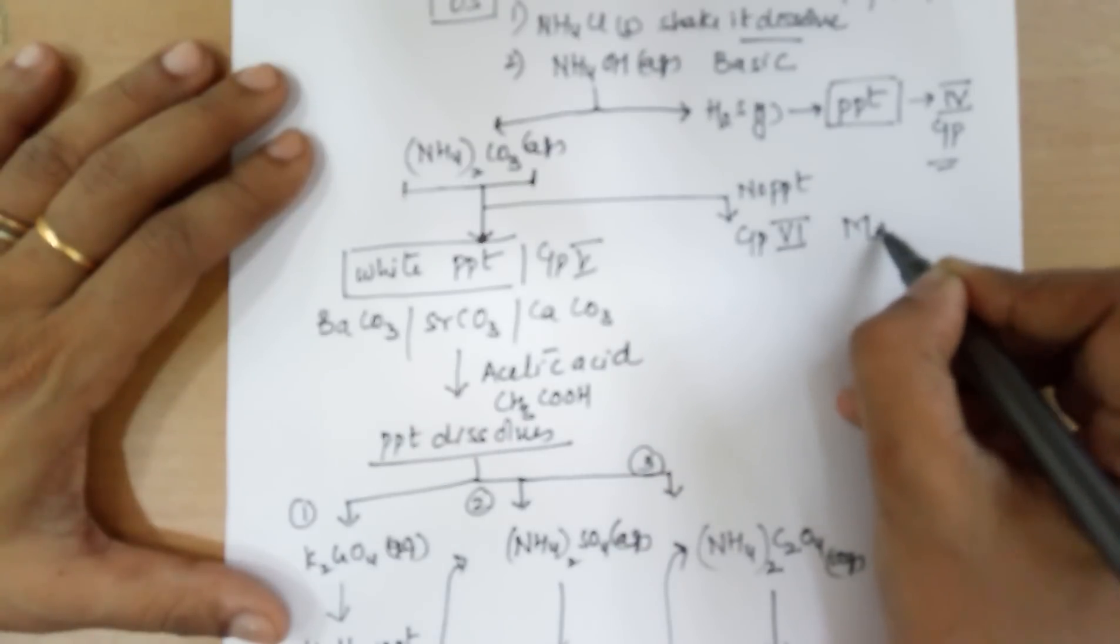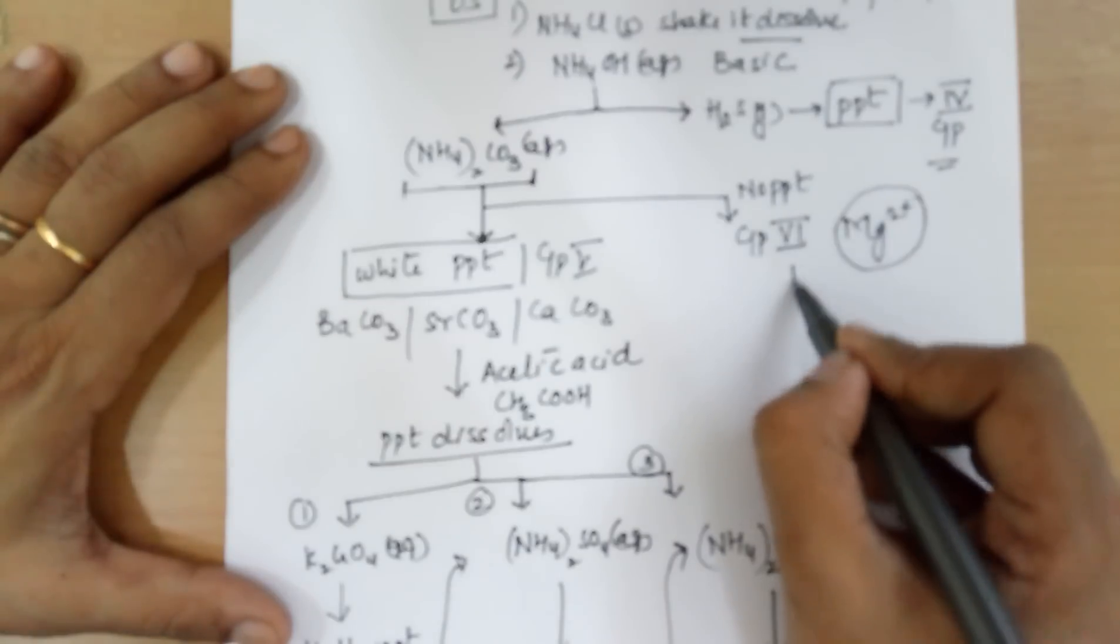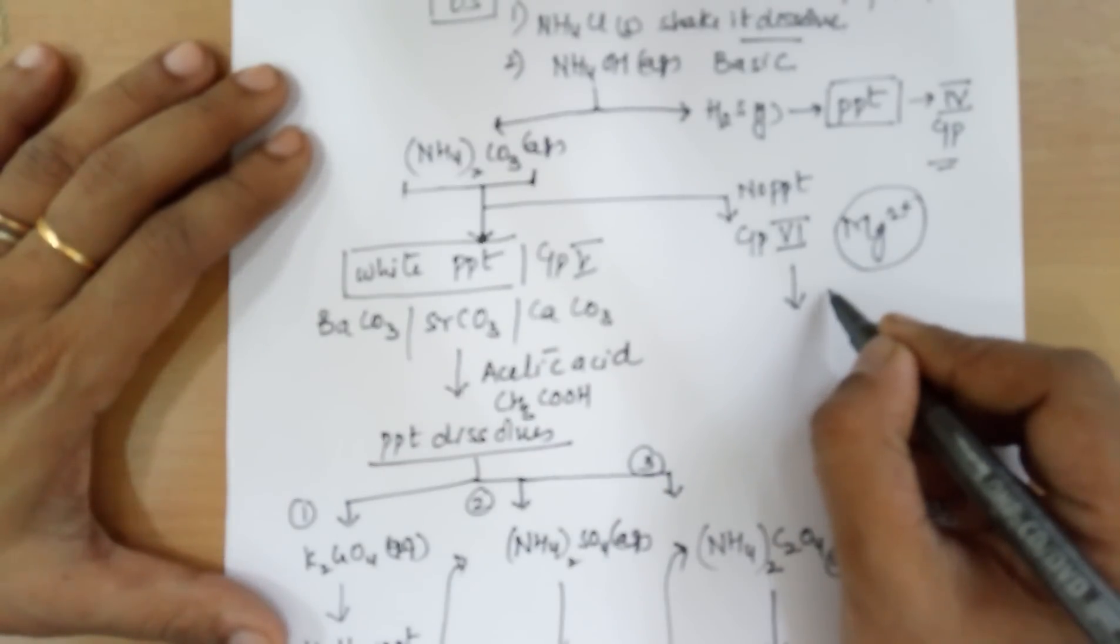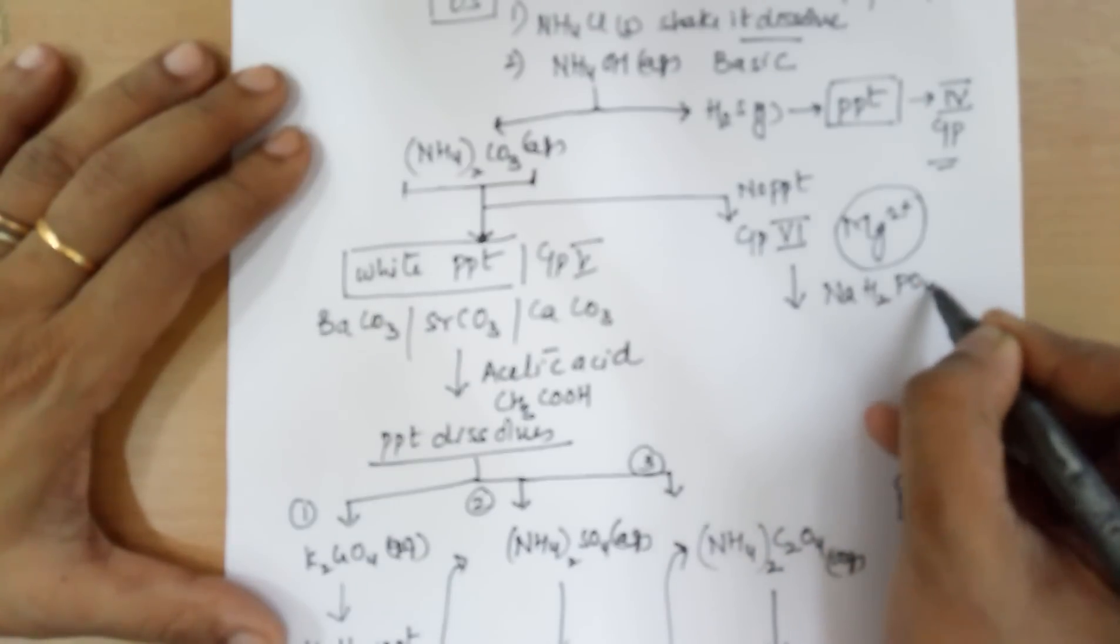In group 6, you have only one cation, magnesium. Hence, to this solution, you need to add sodium dihydrogen phosphate solution.